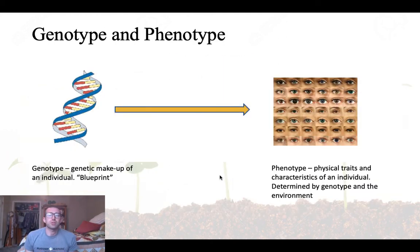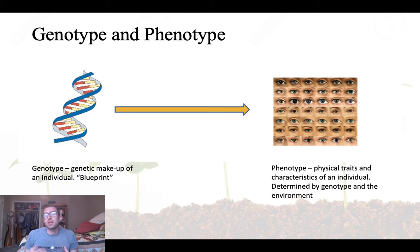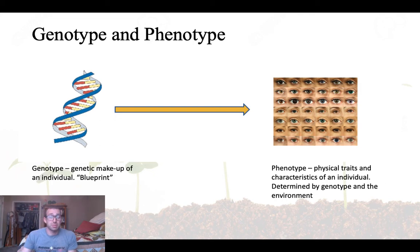Looking at an organism as a whole, we have what's called the genotype — the entire genetic makeup of an individual, all of the genes — which is really the organism's blueprint. It sets the stage for what that organism is going to be. We also have the phenotype, which is the actual observed characteristics of that organism, the physical traits we see. The phenotype is determined by the genotype and the environment.